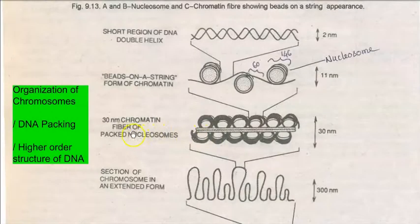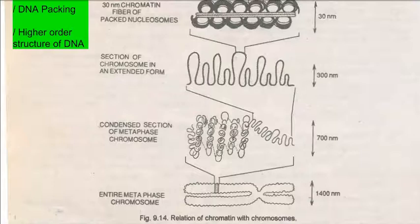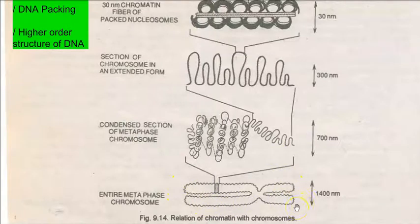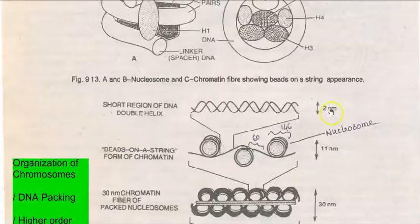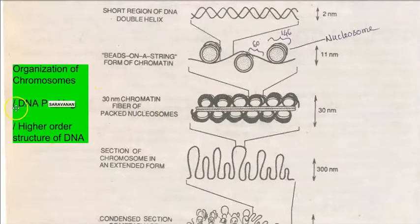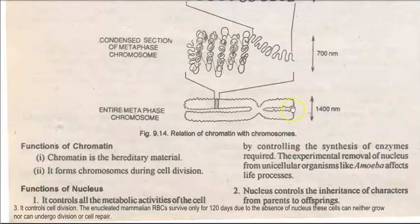The next size is the 30 nanometer chromatin fiber packed into nucleosome structures. Part of the chromosome is shown in extended form at around 300 nanometers. A further higher order structure is a condensed section of a metaphase chromosome at around 700 nanometers. Finally, the completely condensed DNA molecule — chromatin forming the chromosome — is visible during metaphase at a size of 1400 nanometers. So a very small 2 nanometer structure, through DNA packing, results in the formation of a 1400 nanometer chromosome.